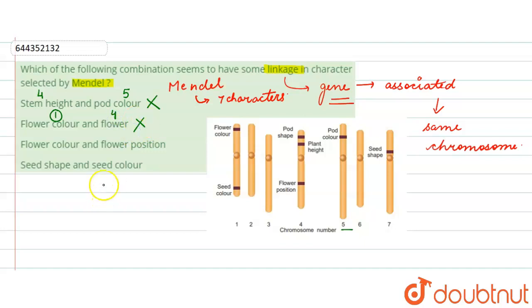The third option is similar: flower color and flower position. Again, chromosome number 1 and 4, so this option will also be wrong.